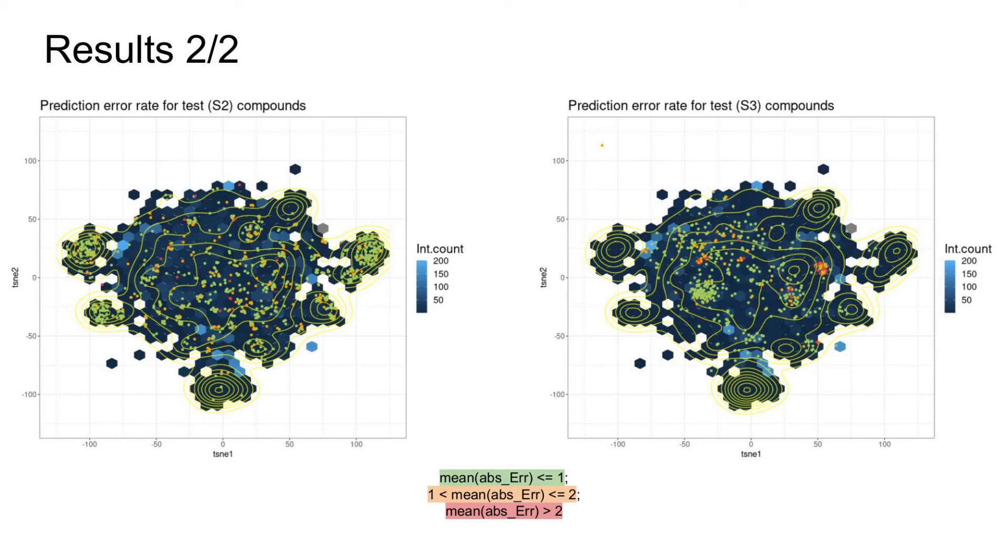What these graphs tell us is that, for example, in the setting two test set, most of the compounds located in highly dense areas such as surrounding clusters have low mean error rates in comparison to largely scattered compounds in the low-density cloud in the middle.